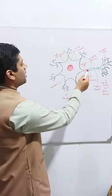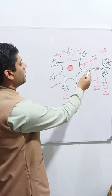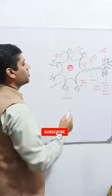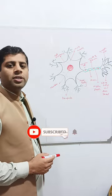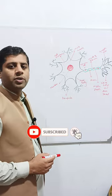Then arising from the cell body is the axon. It is an elongated fiber-like projection and typically there is a single axon per neuron.